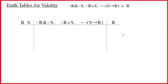How to construct a truth table to show whether an argument is valid or invalid. The argument we'll use is expressed here at the top, in standard form. We've got three premises, and the turnstile introduces the conclusion.